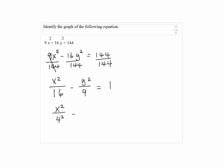So, this is the same as x squared over 4 squared minus y squared over 3 squared equals 1.